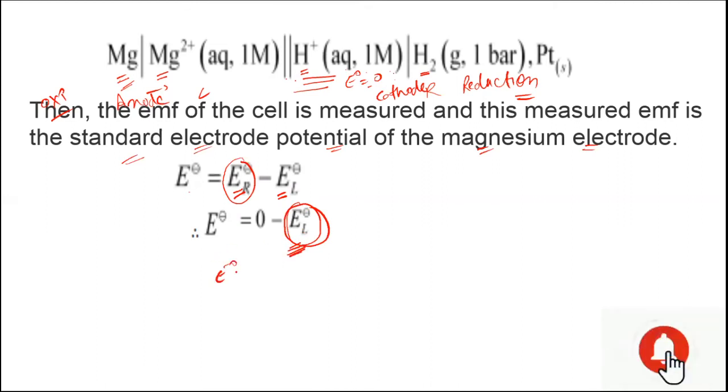Here, E° of the cell equals minus E° of Mg²⁺|Mg. So by coupling the magnesium electrode with the standard hydrogen electrode, we can find out the value of the electrode potential of the Mg²⁺|Mg system. I hope you are able to understand this topic.